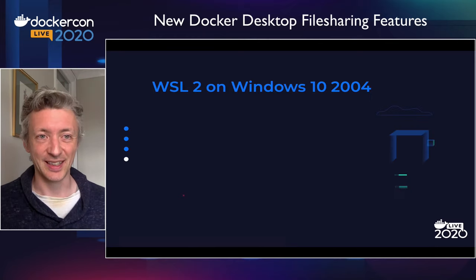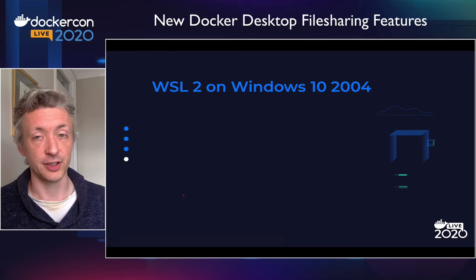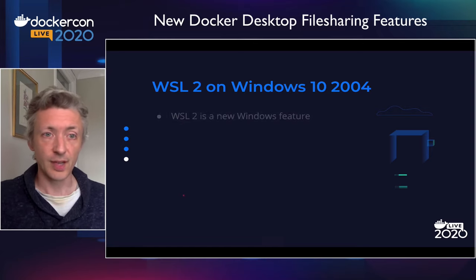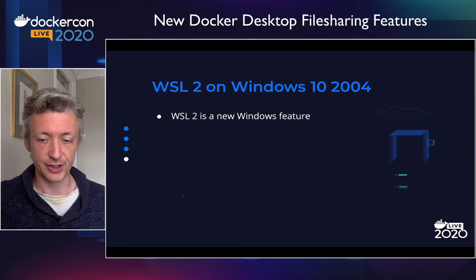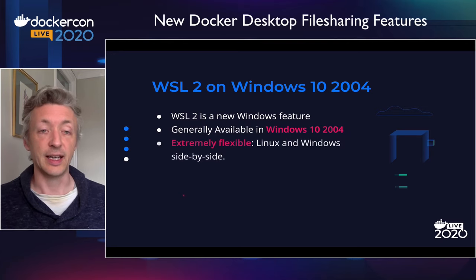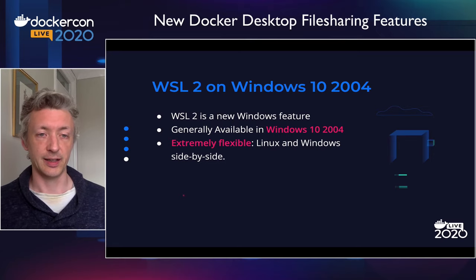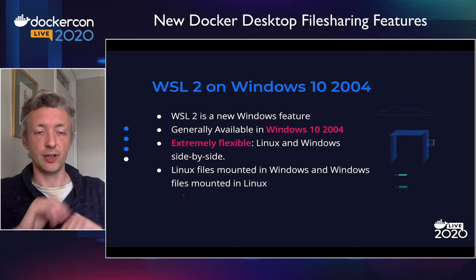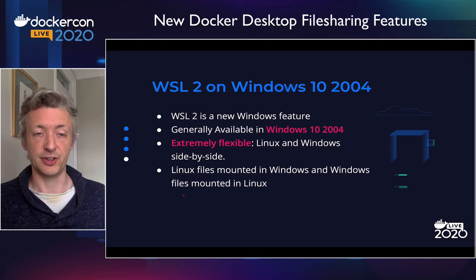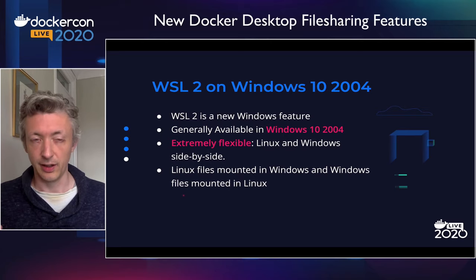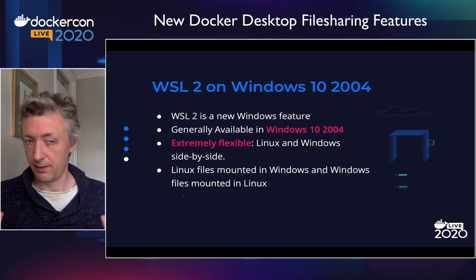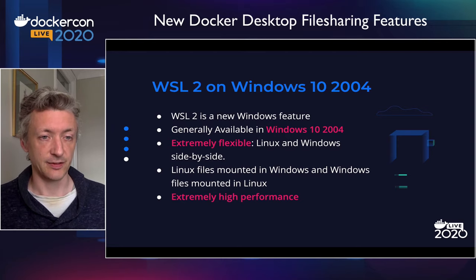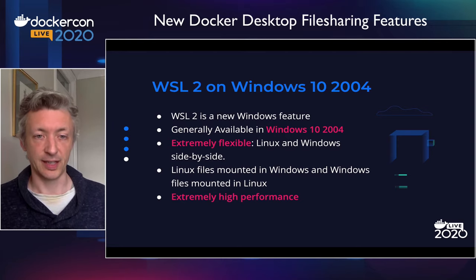But there's a whole new, exciting possibility now. We have Windows 10 2004, just released days ago. It has a new feature called WSL2 — a very good feature, generally available, and extremely flexible. It runs a Linux kernel and Windows kernel side by side, which is fantastic. All the file systems are mounted in both directions: Linux files are mounted in Windows and Windows files are mounted in Linux. So wherever you are, whether in a Linux shell or a Windows shell, you can access everything. And it's got extremely high performance, particularly when you access Linux files from the Linux file system.